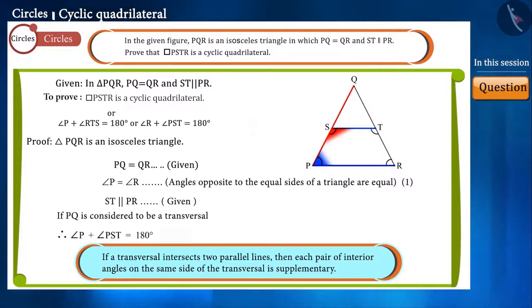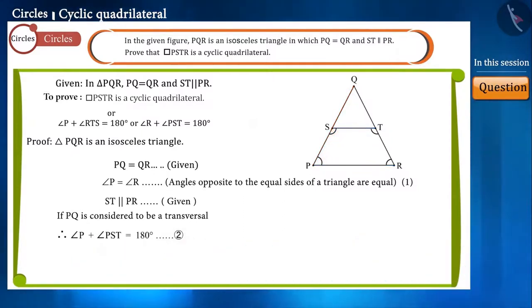Considering this as equation 2, angle P and angle R from equation 1 are equal. Now in equation 2, angle P can be replaced by angle R. That is, angle R plus angle PST will be equal to 180 degrees.